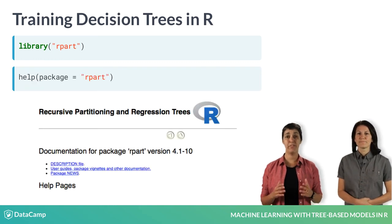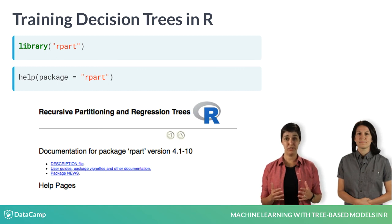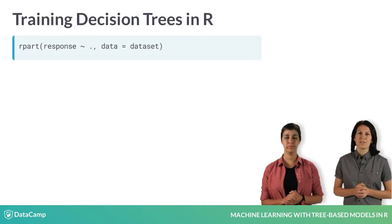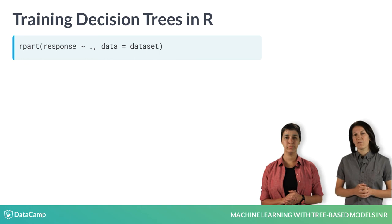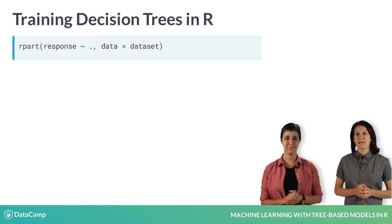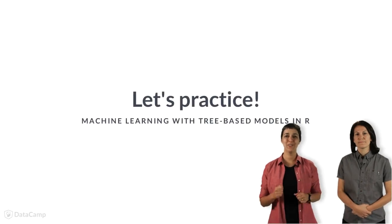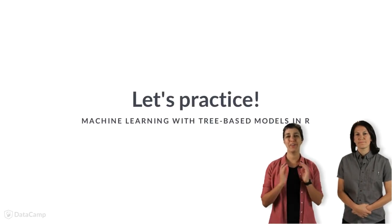Rpart is short for recursive partitioning, which is a process used in the training of a decision tree model. If you want to get familiarized with what is inside the rpart package, you can take a look at the help page in R. You can use the rpart function to train a decision tree model — we'll go into more detail about each argument later. But for now, you can see the basic syntax here. This course is very hands-on, so let's start right away with an example.